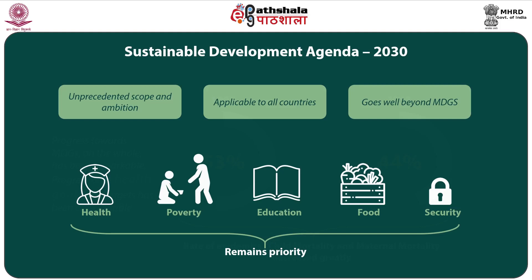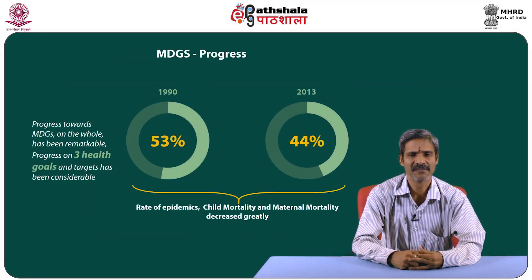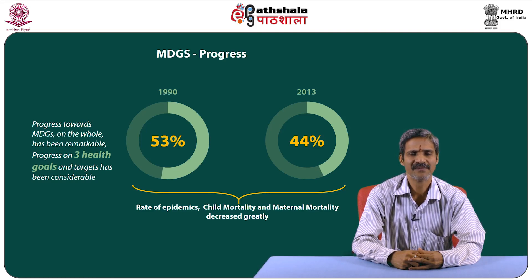Let us now look at the progress towards millennium development goals. On the whole, the progress has been remarkable. The progress made included poverty reduction, education improvement and increased access to safe drinking water. Specifically, the progress with regard to the three health-related goals of the millennium development goals and targets has been considerable. At the global level, HIV, TB, and malaria epidemics were turned around and child mortality as well as maternal mortality decreased by a great extent since 1990.